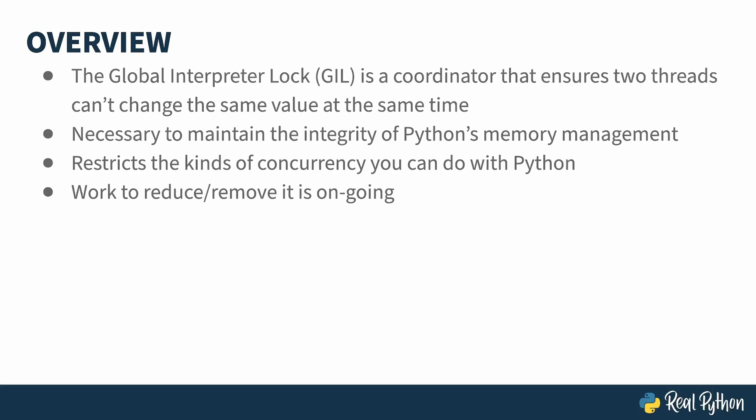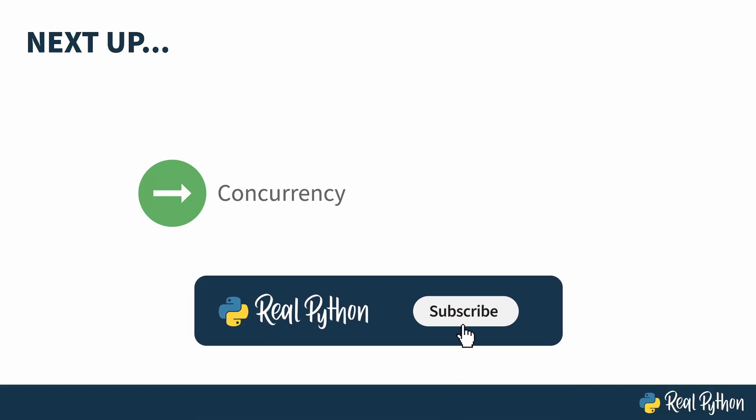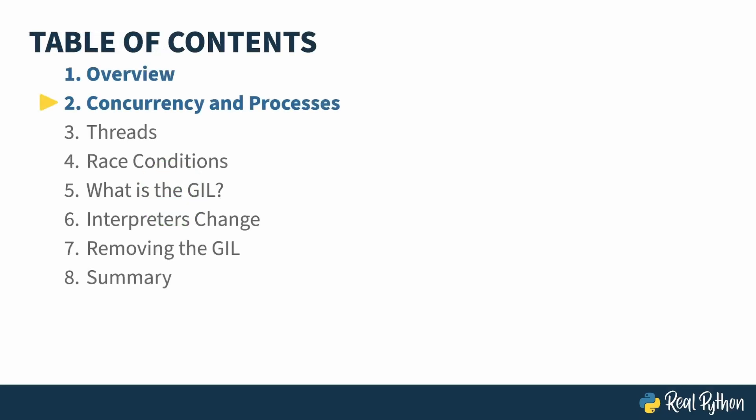To understand the why of the GIL, first you need to understand the varieties of concurrent programming available to you, and how Python deals with them. In the previous lesson I gave an overview of the course. In this lesson, I'll give you background on concurrency so that you can better understand why the GIL exists.